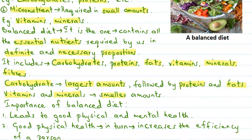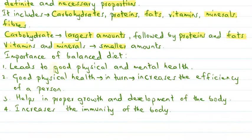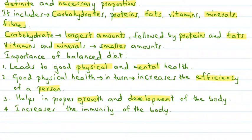A balanced diet leads to good physical as well as good mental health. Good physical health increases the efficiency of a person. A balanced diet also helps in proper growth and development of the body, and it increases immunity — the ability of our body to fight against different diseases and infections.